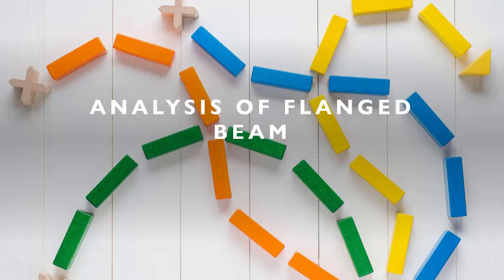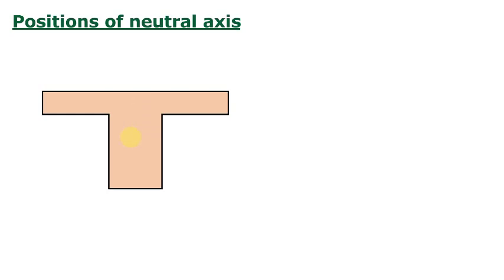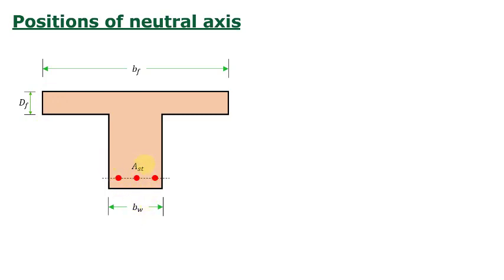This session is on the analysis of flange beam. Consider a singly reinforced T-beam with effective flange width Bf and depth of flange Df. This depth of flange will be equal to the slab thickness. Bw is the width of the web. At the ultimate limit state of collapse, there can be two possible positions for the neutral axis.